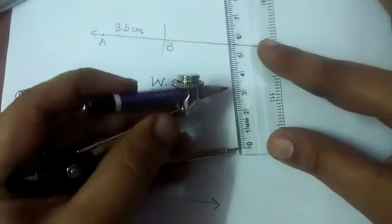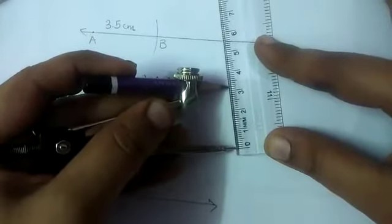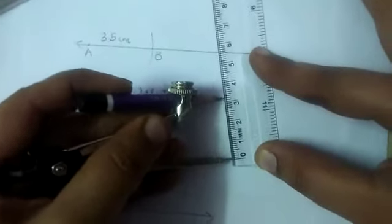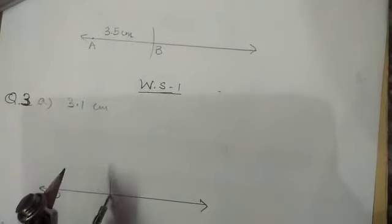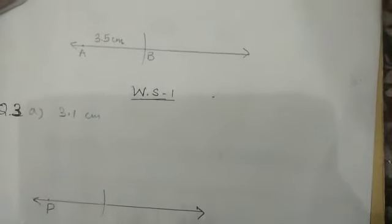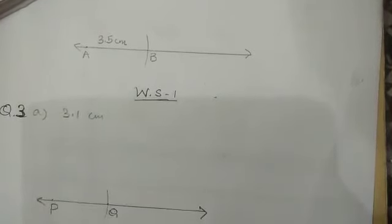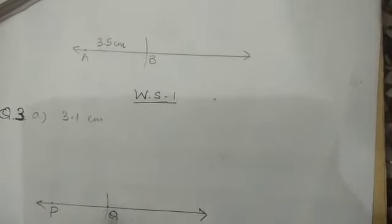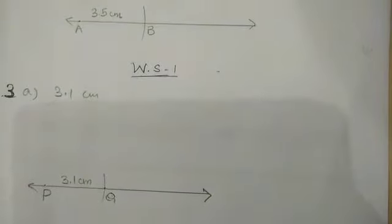Now open your compass and measure 3.1, as I am doing, exactly 3.1. Now keep at point P and mark an arc like this. Got it? Now name this intersecting point as Q.